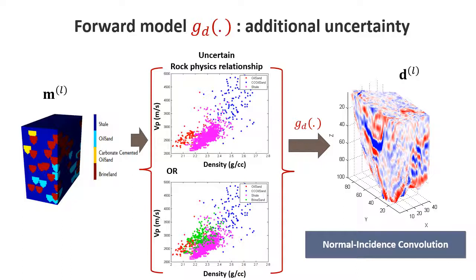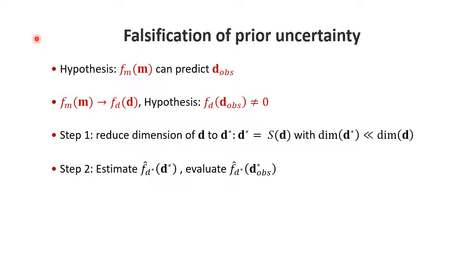Now we're ready to do the forward falsification process. Our hypothesis is that with our current prior model, f of m, we can predict the observations. The way we're going to do that is we're going to turn our Monte Carlo of model realizations into Monte Carlo of data realizations, and then evaluate the observations in that distribution. In order to do that, of course, the data itself is very high dimensional. It's seismic data. We need to do dimension reduction.